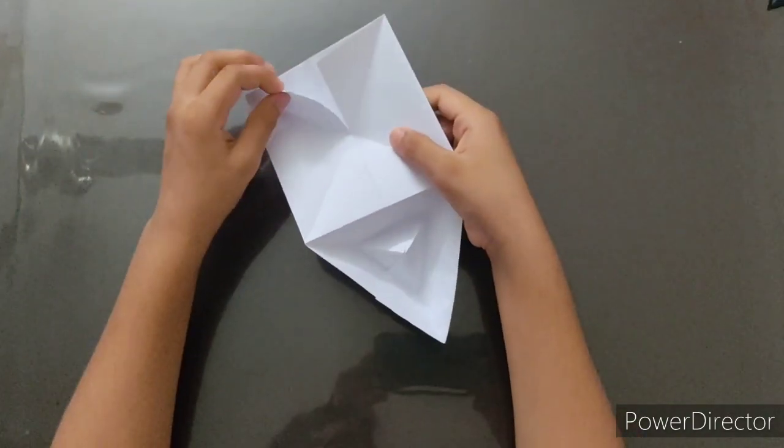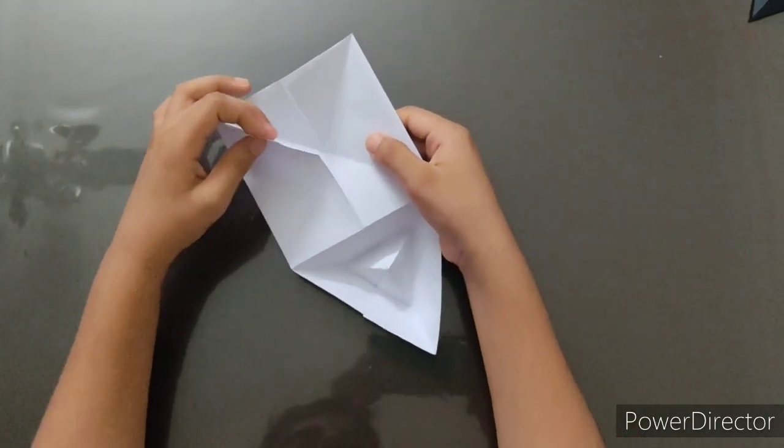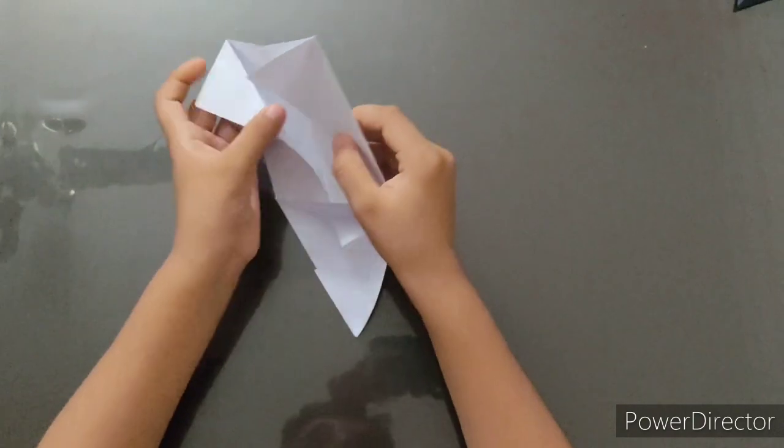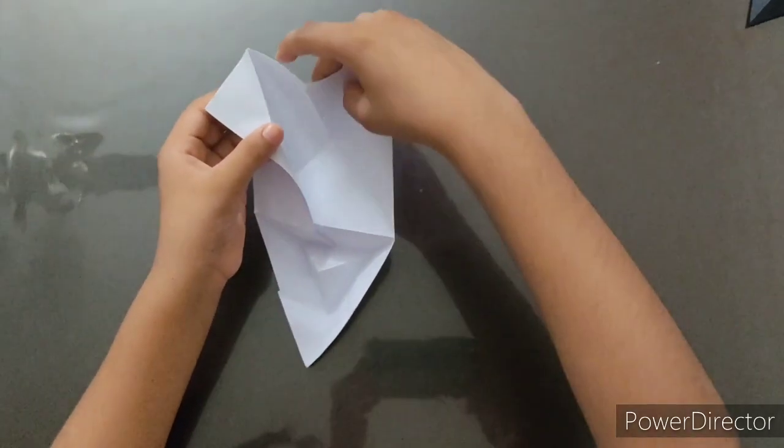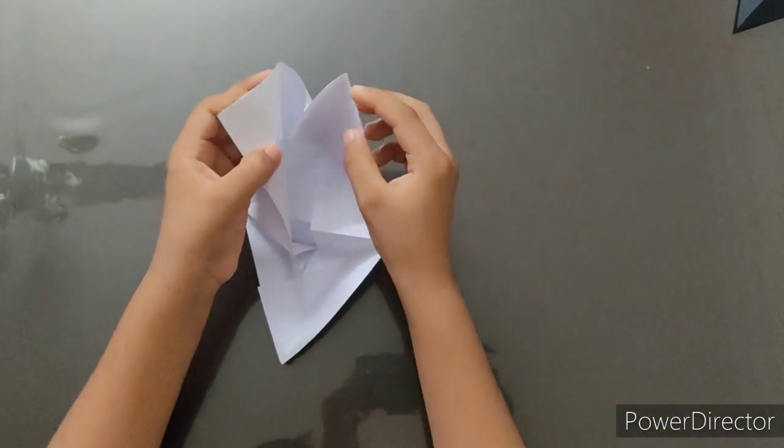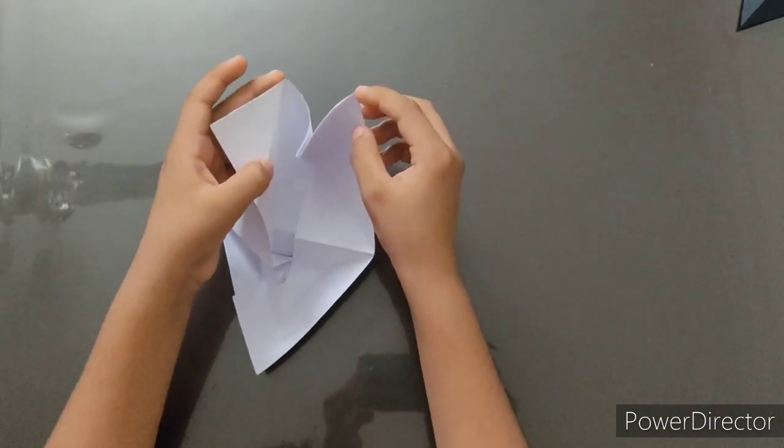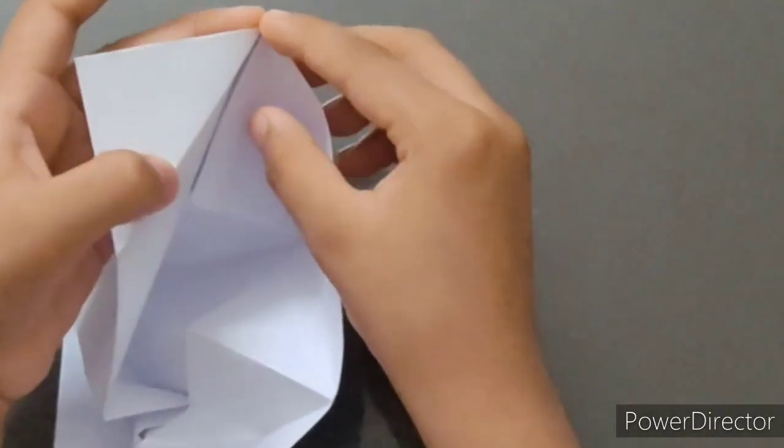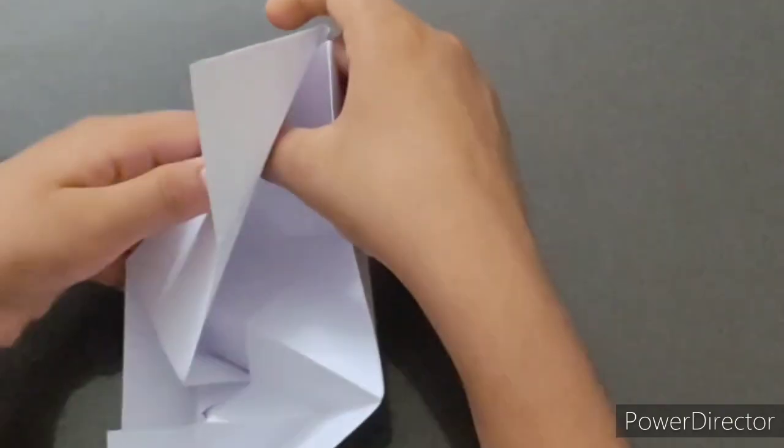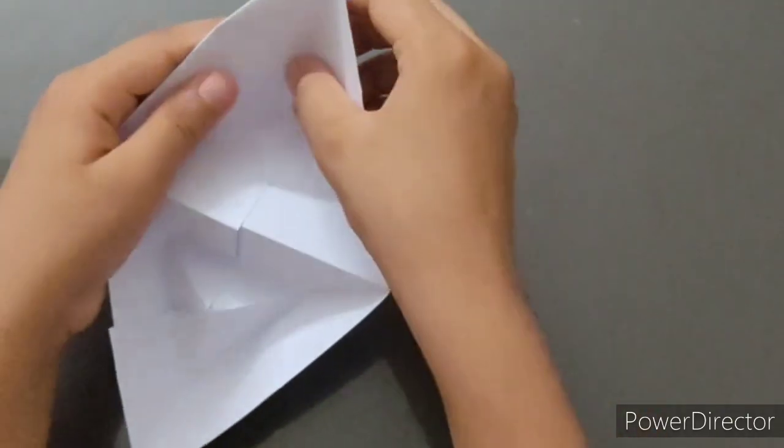Now, we have to do the other part. Slightly open this flap and bring this edge together. Come again like this and fold it inside. Now, tuck in that flap here.